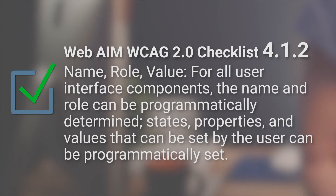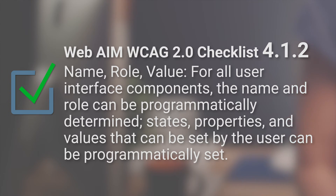Okay, that's kind of terse. The web content accessibility guidelines go into a bit more detail: for all user interface components, the name and role can be programmatically determined. States, properties and values that can be set by the user can be programmatically set. So what are name, role, and value, and how can we make sure that they can be programmatically determined and set?